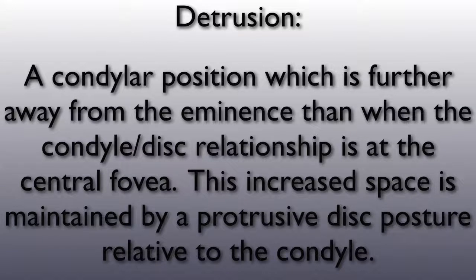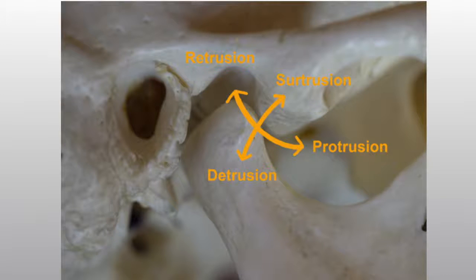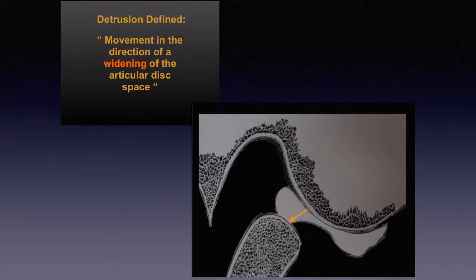This increased space is maintained by a protrusive disc posture relative to the condyle. This illustration depicts the four relative movements of the condyle versus the eminence: sirtrusion being closer to the eminence, detrusion being further away, and then protrusion and retrusion. Here we see the ideal or normal relationship of the condyle articulating with the central fovea of the disc. The problem arises when the occlusion demands a greater space between the condyle and the eminence, as depicted here. This is, by definition, a detrusive condylar posture.